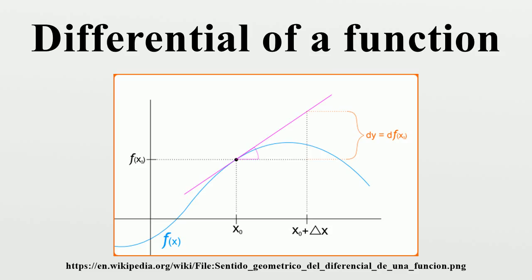In physical treatments, such as those applied to the theory of thermodynamics, the infinitesimal view still prevails. Courant and John reconcile the physical use of infinitesimal differentials with the mathematical impossibility of them as follows: the differentials represent finite non-zero values that are smaller than the degree of accuracy required for the particular purpose for which they are intended. Thus, physical infinitesimals need not appeal to a corresponding mathematical infinitesimal in order to have a precise sense. Following 20th century developments in mathematical analysis and differential geometry, it became clear that the notion of the differential of a function could be extended in a variety of ways.